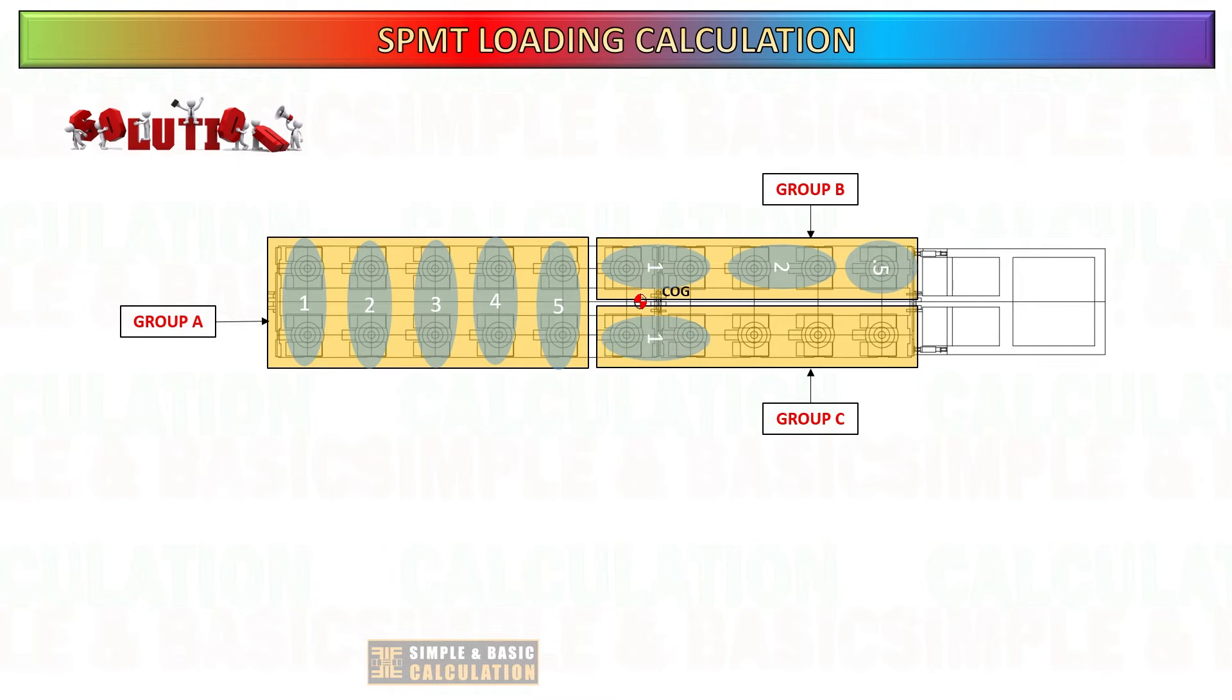Group A consists of five axle lines whereas groups B and C each contain two and a half axle lines as shown in the slide. Now you can plot the stability triangle of the three-point grouping. Each three sides of the triangle is based on the center of gravity of the grouping.